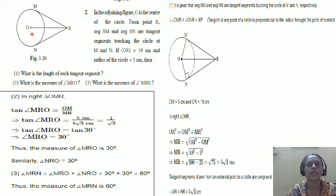You want the length of each tangent segment. What is the measure of angle MRO, and then what is the measure of angle MRN? Observe, join MO and join ON.